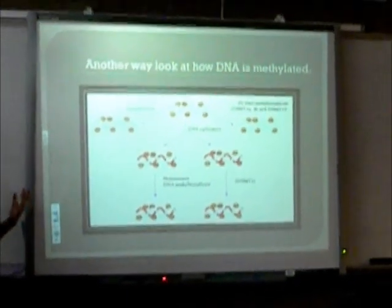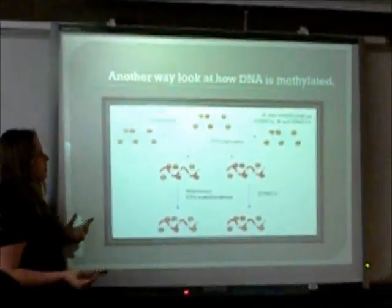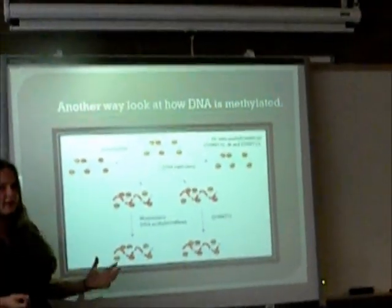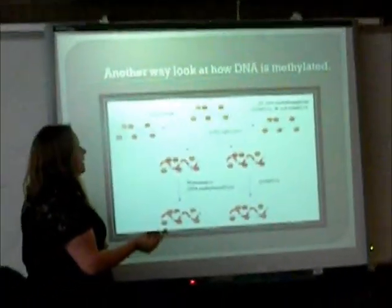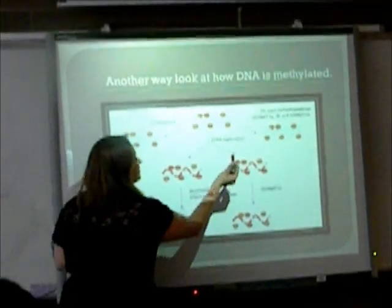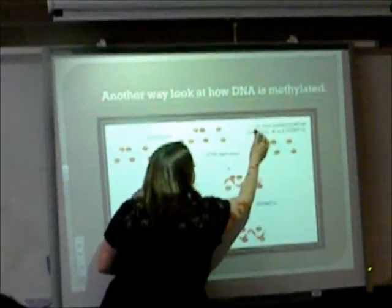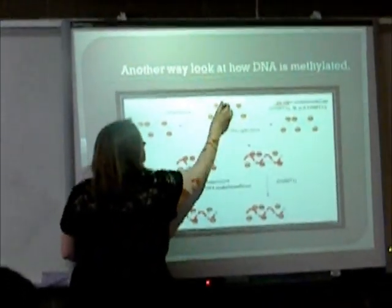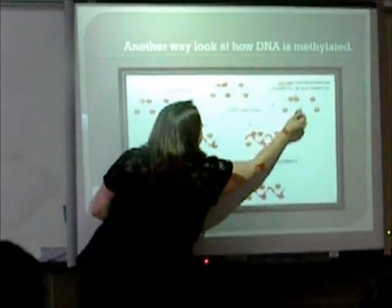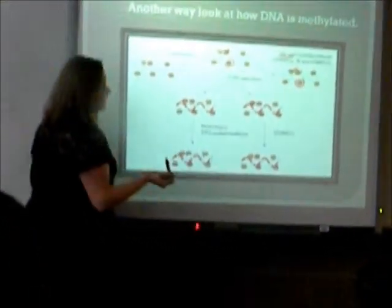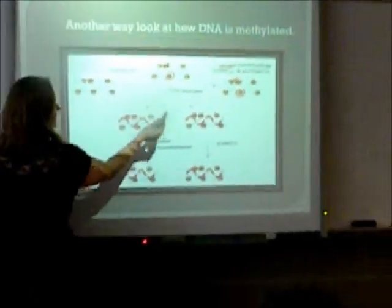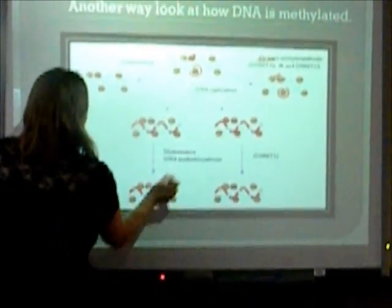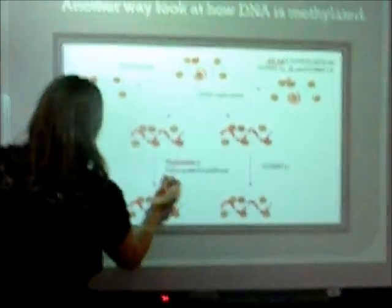Here is another look — a general overview. Methylation can be reversed, which is a different topic I won't go into. But to methylate a gene, you use the de novo DNMT and it adds the new methylation — so there is no methylation here, but it is added here. When the strand is split, you can see the methylation split as well, and it is then added by the maintenance DNMT.